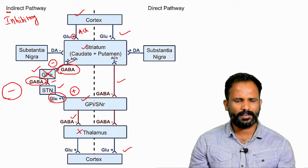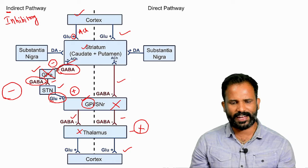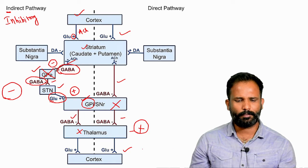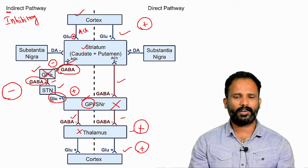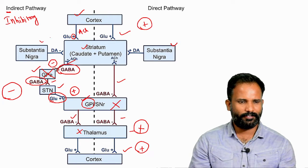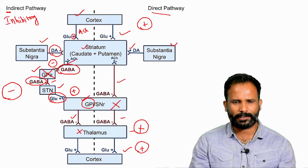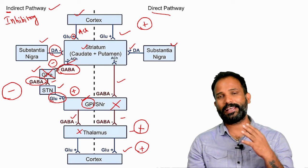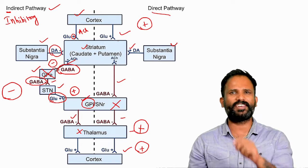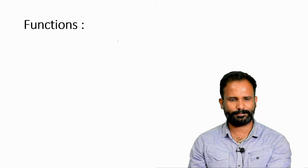In the direct pathway, the cortex again stimulates the striatum. The striatum releases the inhibitory neurotransmitter GABA, which acts on globus pallidus interna, inhibiting it. Since globus pallidus interna is inhibited, it can no longer secrete GABA, so the thalamus is excited. An excited thalamus excites the motor cortex, so the direct pathway is excitatory. Substantia nigra releases dopamine, which is stimulatory over the direct pathway and inhibitory over the indirect pathway.